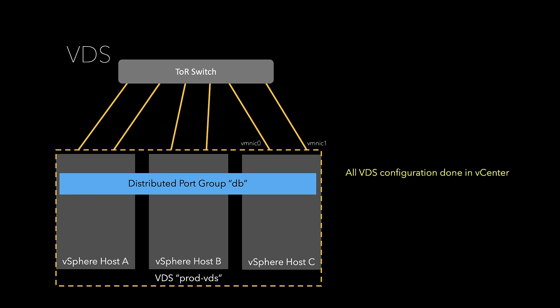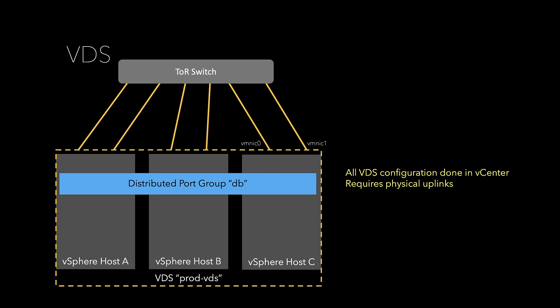One of the main points I want to highlight is that all of the VDS configuration is done in vCenter — creating the VDS, adding the three hosts, assigning the uplinks, configuring the port group — 100% of that is completely done in vCenter. This is important to remember because when we get to the NVDS it will be different. The other thing to take away is that the VDS always needs physical uplinks if you want to communicate outside the host. Technically you could have a VDS with no uplinks for internal switching, but for external connectivity you need dedicated uplinks.